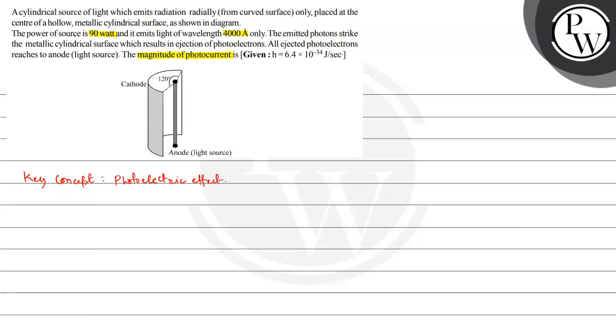So here the power source is 90 watt but this curved surface, the receptor curved surface, that is the cathode, is not a completely curved cylindrical surface. Because here we can see that the angle subtended by this cylindrical surface is not 360 degree. So the area of reception of photons